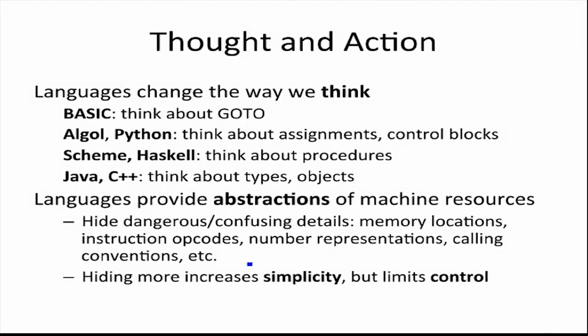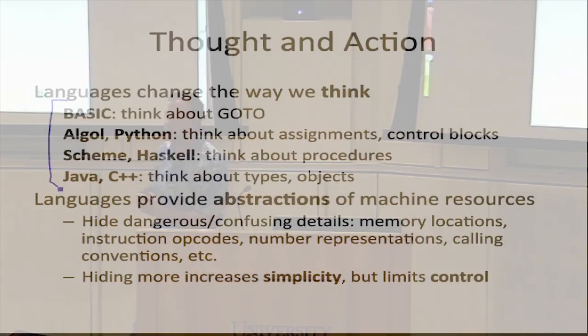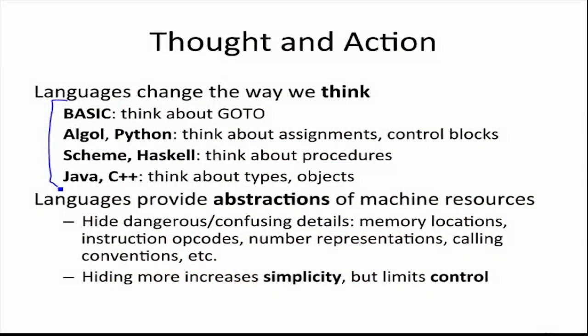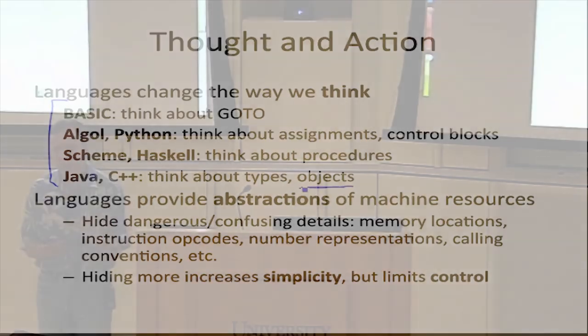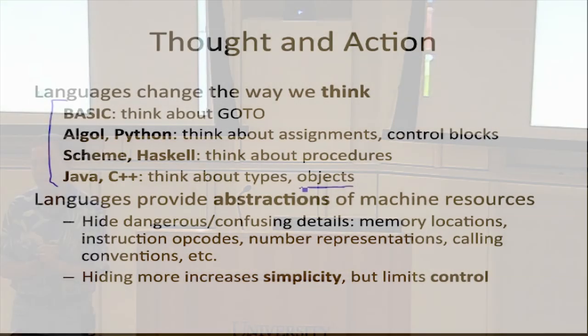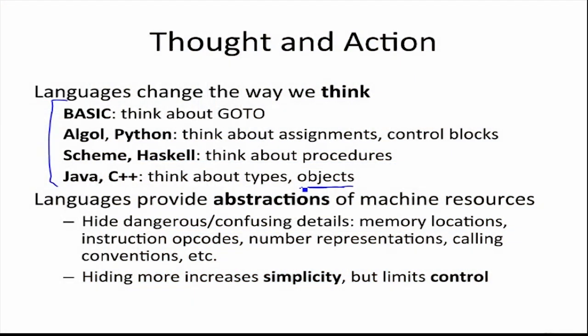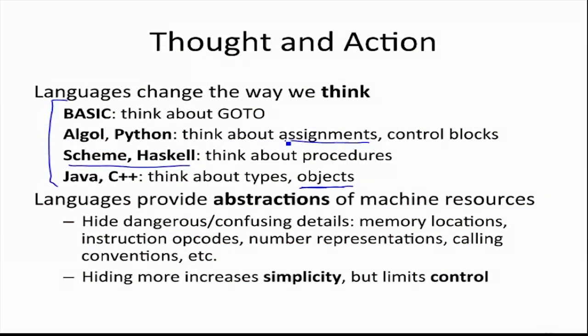This is true whether we're talking about music notation, natural languages, or programming languages. These languages cause you to think about different things. If you're writing programs in Java or C++, they're designed around objects — the language encourages you to always think about objects, the syntax forces you to create classes and think about things as methods and objects. Other languages, functional languages, are all about thinking about procedures. The language provides good ways to pass around procedures. That's the biggest thing languages do: change how you think.